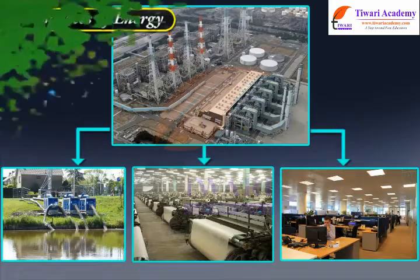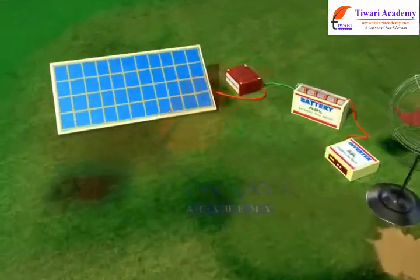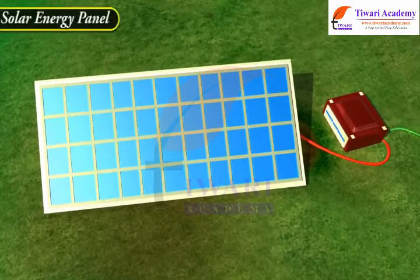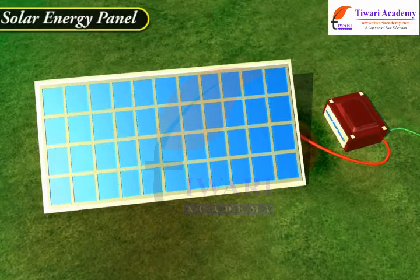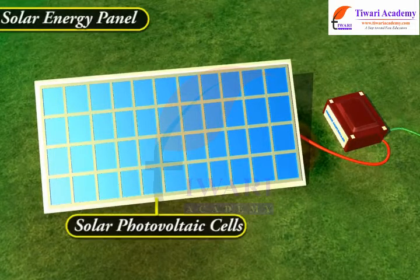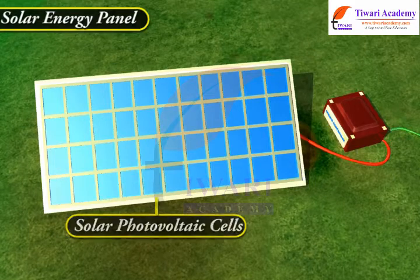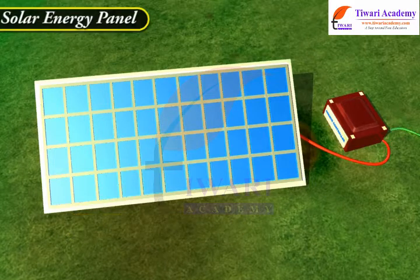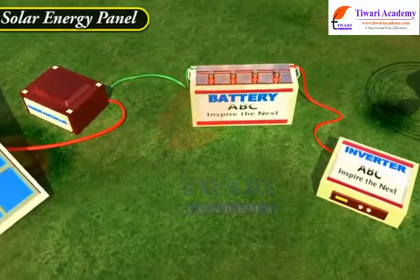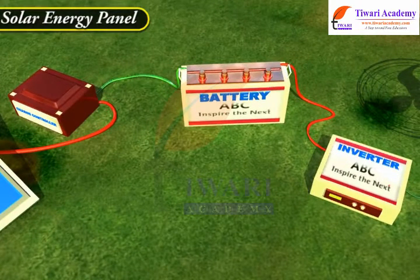Solar energy can also be used to meet our electricity requirements through solar photovoltaic, or SPV, cells. Solar radiation gets converted into DC electricity directly. This electricity can either be used as it is or can be stored in a battery.